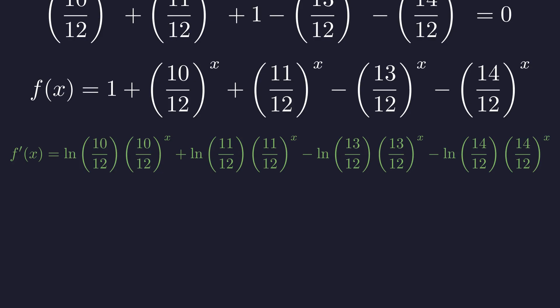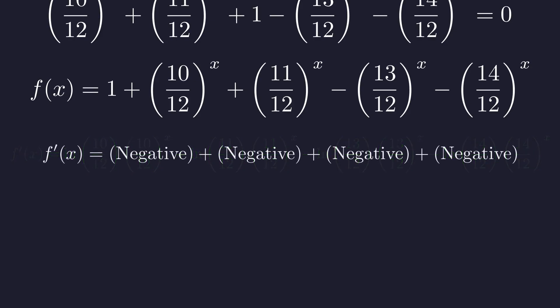For the last two terms, 13/12 and 14/12 are greater than one, so their logarithms are positive. But notice we're subtracting these terms, which makes their contribution negative as well. So every single term in this derivative is negative. This is a powerful conclusion.